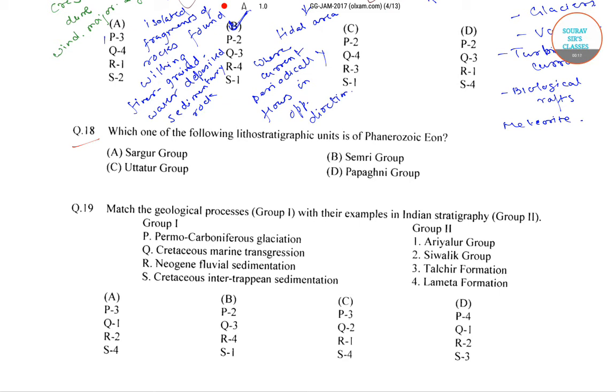In this question we have which one of the following lithostratigraphic units is of Phanerozoic Eon. Now this Phanerozoic Eon is the current Eon that is going on in the geologic time scale, and it covers 541 to 0 million years ago.